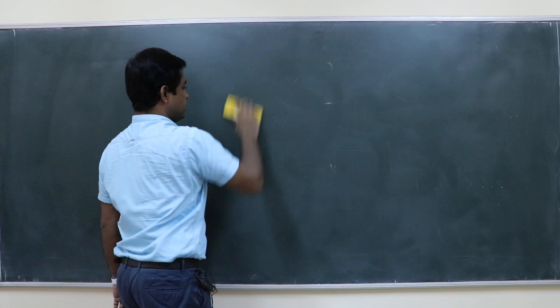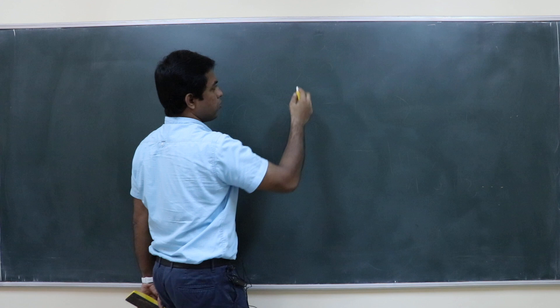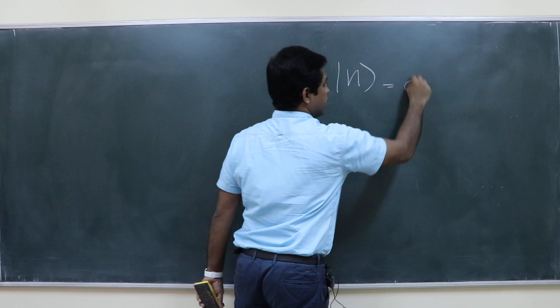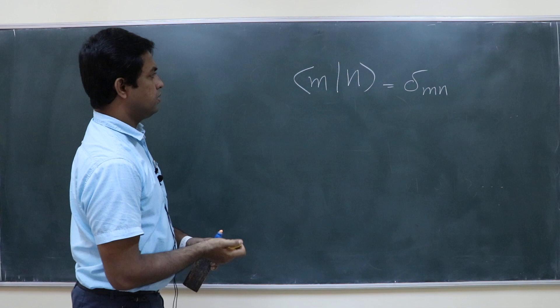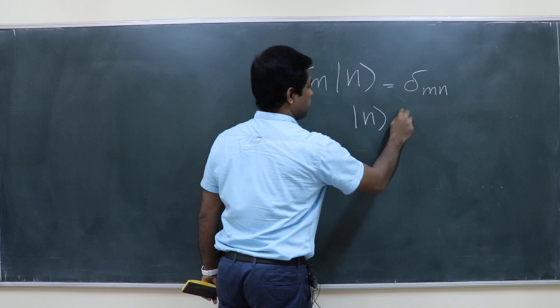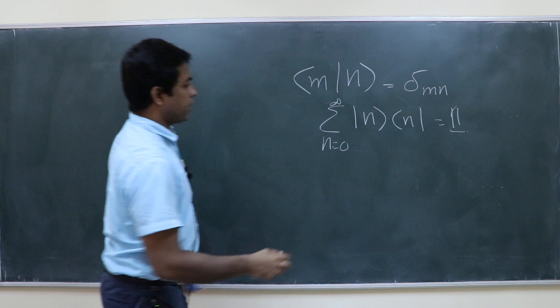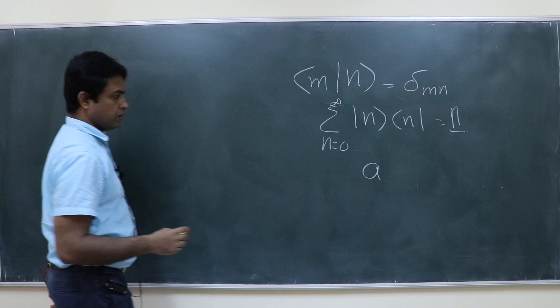How to find out the matrix elements of an operator? Basically in some representation — some basis. Here the basis I am going to consider is the ket n basis. In the ket n basis, bra m ket n equals delta m n, and you know the completeness relation: sum over n from 0 to infinity of ket n bra n equals identity. I want to write down the operator a in this ket n basis.